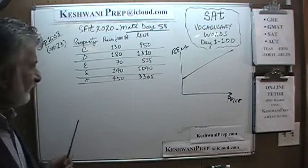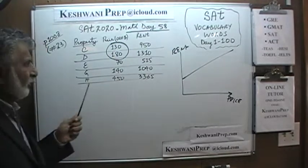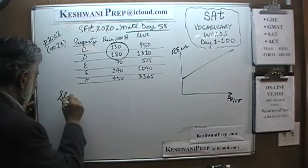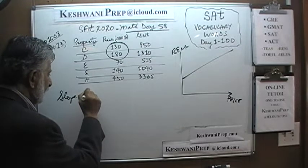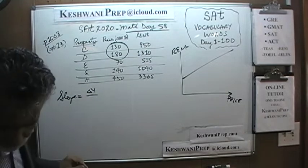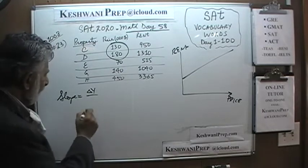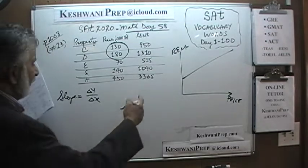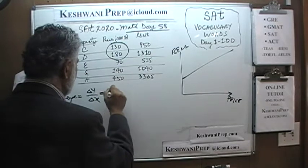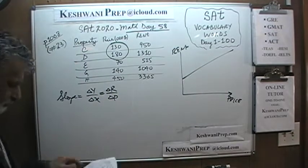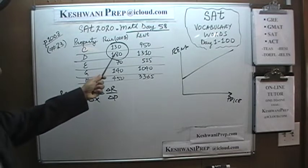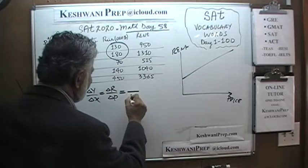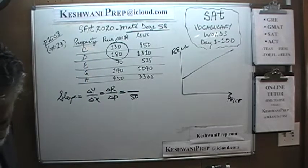I started out with something very simple — I just took the first two data points. The change in price is 50, and that goes at the bottom. The slope is change in rent over change in price. The change in price from 180 to 130 is 50.